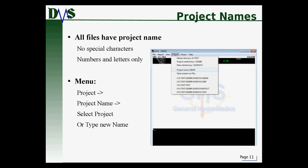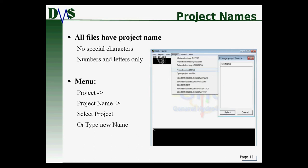When specifying a project name, you can't use special characters — only numbers and letters. You can type any name you want: Jeff, John, James, 15874, any combination of alphanumeric characters. To set this, go to the project menu, select project name, and you'll get a second menu that pops up where you can select an existing project or type in a new name to create a new project. This is also how you open existing projects.